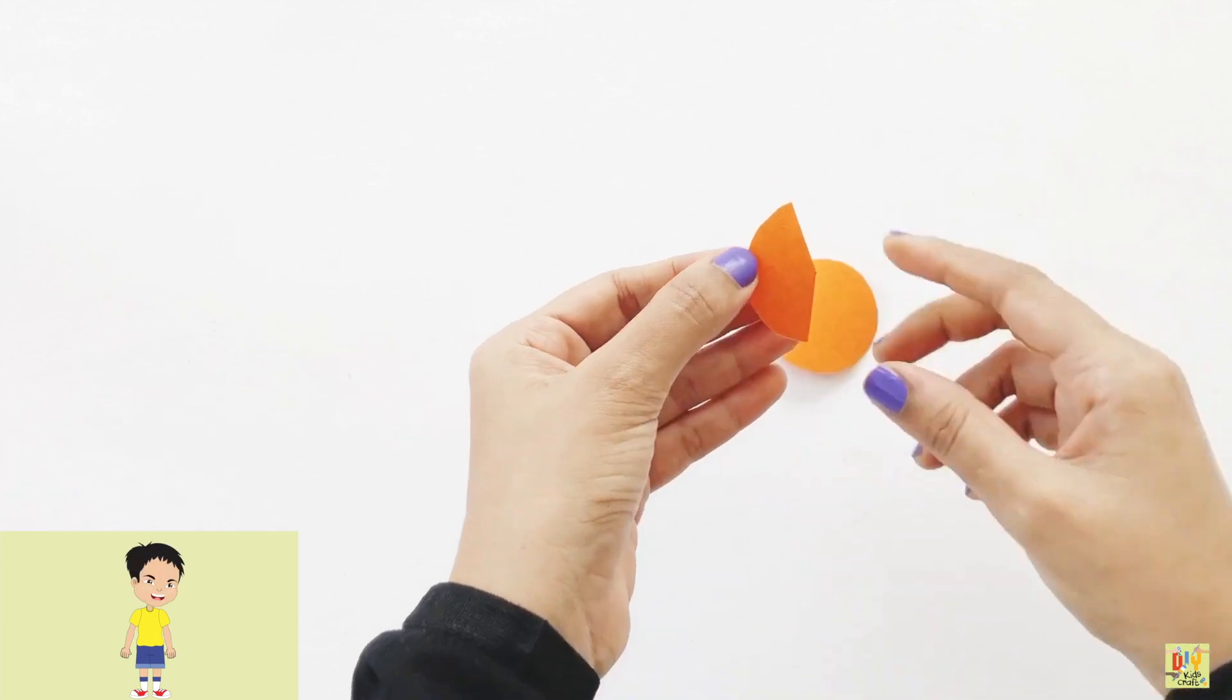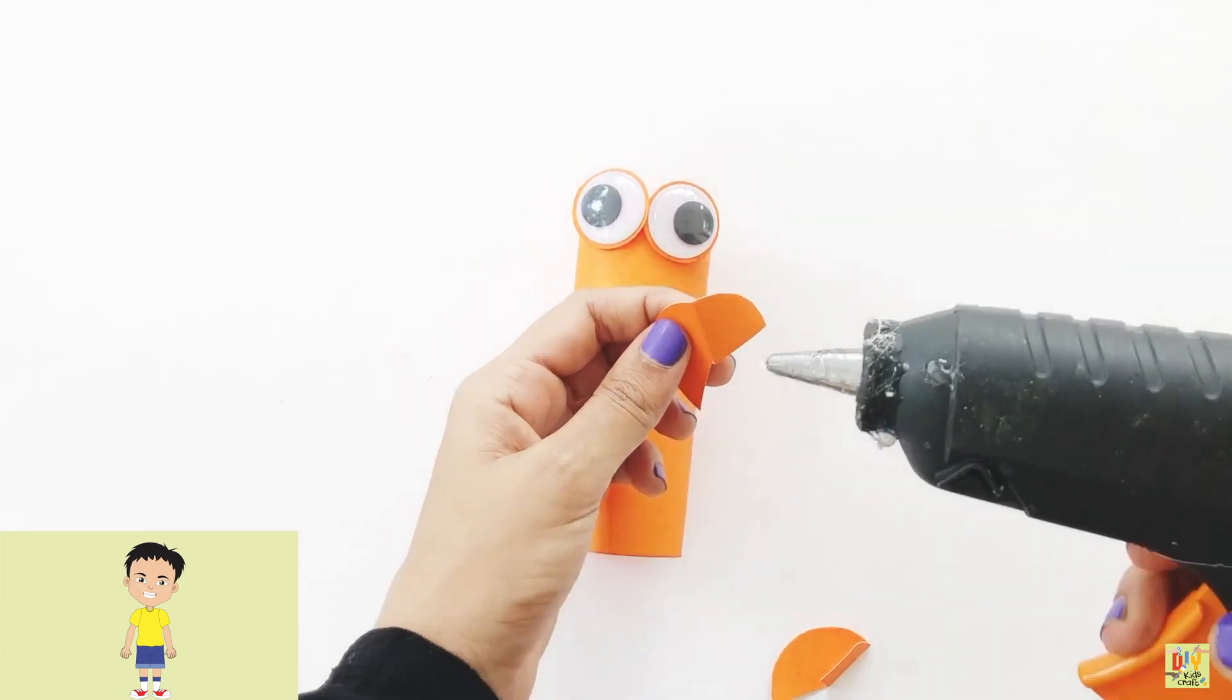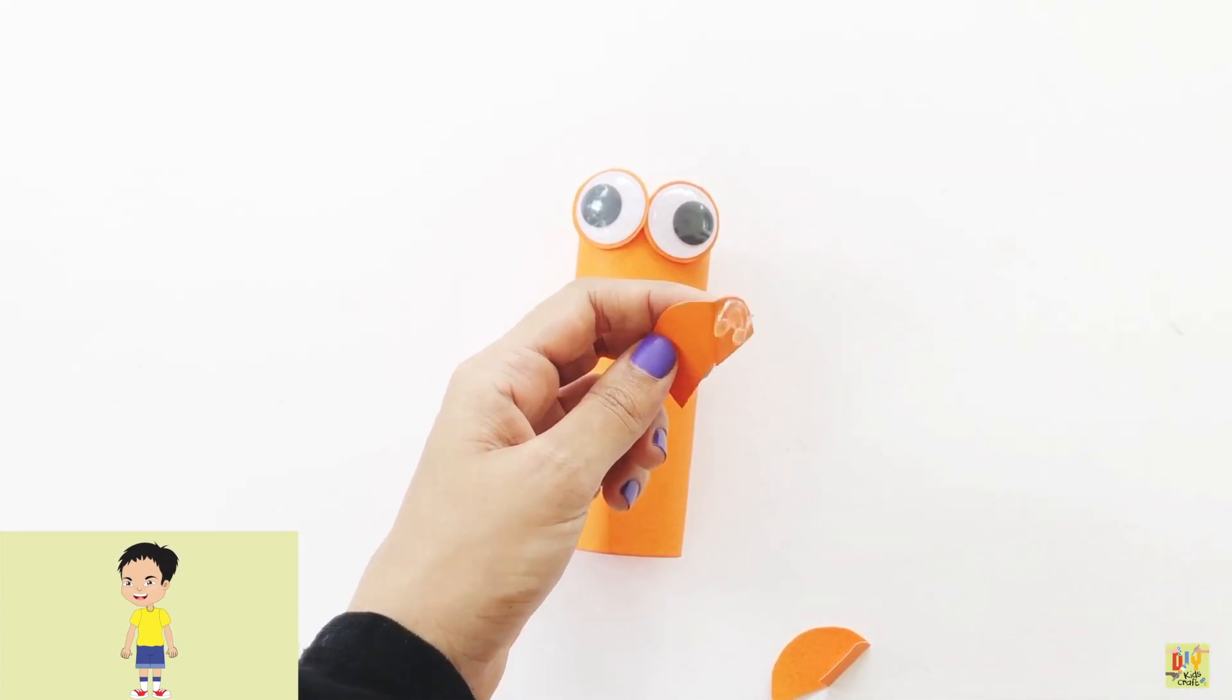After cutting it, we need to fold it. Now we can place the ears on the body of the monster. Make sure it's on the side.